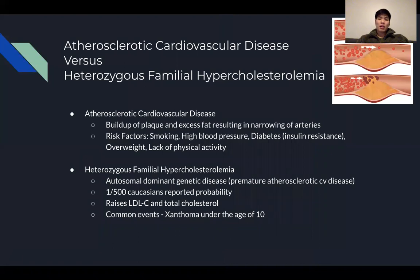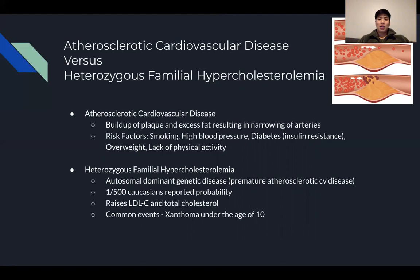The indications are for atherosclerotic cardiovascular disease as well as heterozygous familial hypercholesterolemia. Atherosclerotic cardiovascular disease is more so based on lifestyle factors — buildup of plaque and excess fat narrowing the arteries — through smoking, high blood pressure, diabetes, being overweight, or lack of exercise. Heterozygous familial hypercholesterolemia is a genetic predisposition to premature atherosclerotic cardiovascular disease. It affects 1 in 500 Caucasians and gives a greater probability of raised LDL-C levels and total cholesterol.